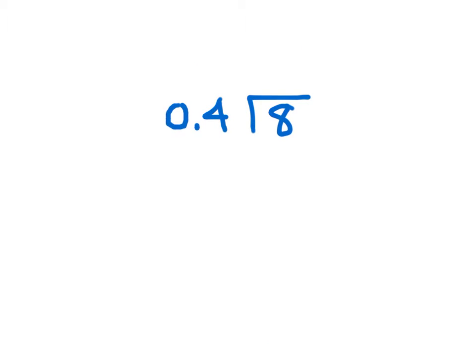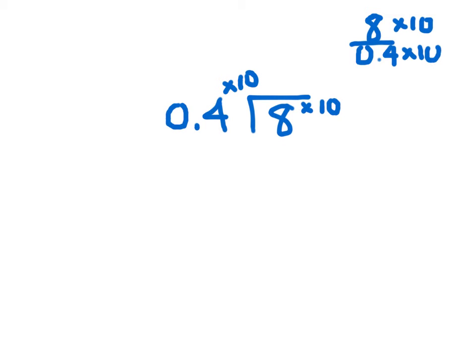Here I have the problem 8 divided by 0.4. What I want to do is move the decimal point so that I have 4 as my divisor instead of 0.4. I'll show it right there within the problem. If I multiply by 10, as we saw on the previous screen, it's valid — I'd have to multiply this by 10 as well. So for the fraction 8 divided by 0.4, it's perfectly valid to multiply by 10 in the numerator and denominator.